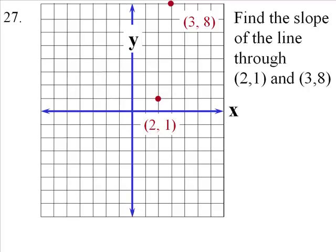Now it looks like we're going up, let's see, 1, 2, 3, 4, 5, 6, 7. And we're going over 1. So right off by looking at the graph, the slope is up 7 and over 1. It's going to be a plus 7.